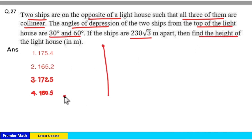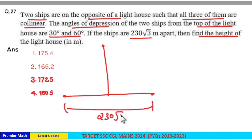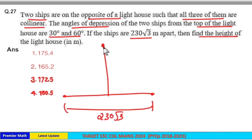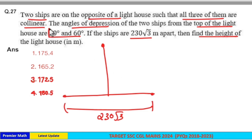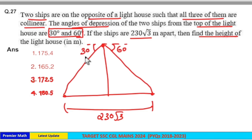The two ships and the lighthouse are collinear, meaning they are on the same line. The horizontal distance between the two ships is 230√3 meters. From the top of the lighthouse, this is the horizontal line, and these are the lines of sight to each ship. The angles of depression are 30 degrees and 60 degrees.